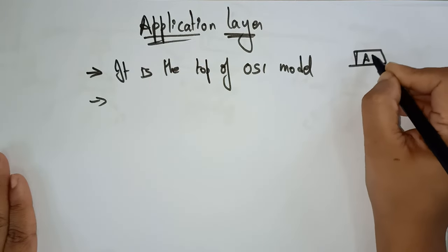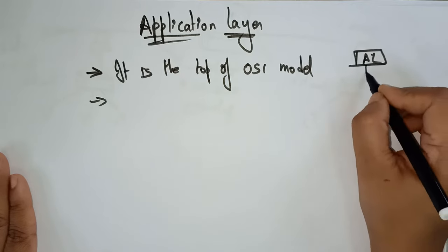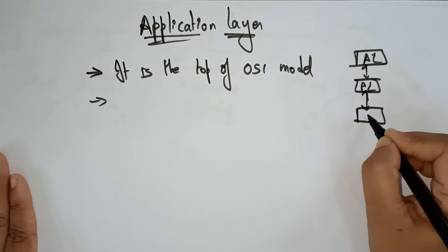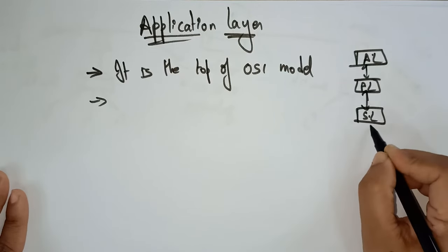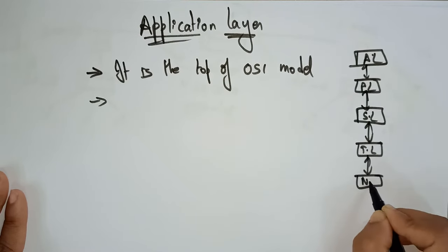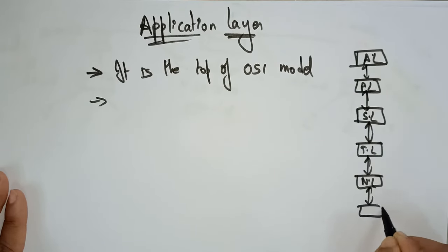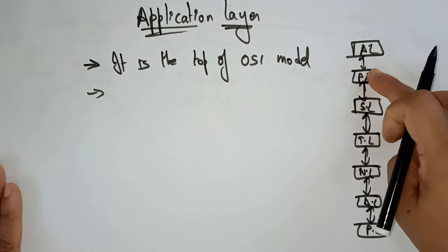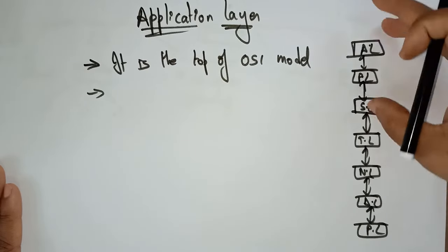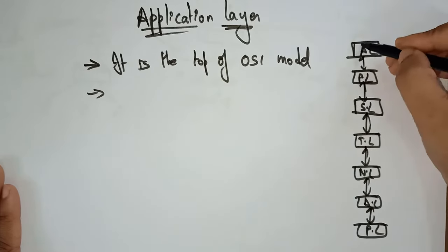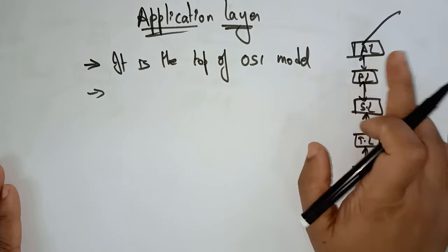This is the application layer, and below it you have the presentation layer, then the session layer, then the transport layer, then the network layer, then the data link layer, and finally the physical layer. So these are all the different layers present in the OSI model.